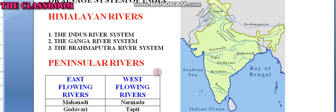The next group is peninsular rivers. Peninsular rivers are divided into east flowing rivers and west flowing rivers. River Mahanadi originates near Chhattisgarh and flows through Odisha. Its length is 851 kilometers. The Mahanadi empties its water into the Bay of Bengal.